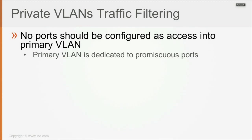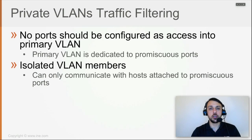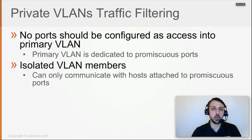Before we go to the traffic filter capabilities, make sure that you're aware that no ports should be configured as static access into the primary VLAN. The primary VLAN is dedicated only to promiscuous ports. Once I configure that kind of setup, I associate secondary VLANs with primary VLANs, configure the secondary VLAN types, and then go on the layer 2 ports and configure those to be either promiscuous ports or host ports, which means they're going to be attached to the isolated or to the community VLAN.